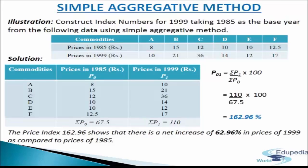Let us understand the simple aggregative method with the help of an illustration. We have to construct index numbers for 1999 taking 1985 as the base year, using simple aggregative method. The data given includes commodities A, B, C, D, E, and F, with prices in 1985 and prices in 1999.